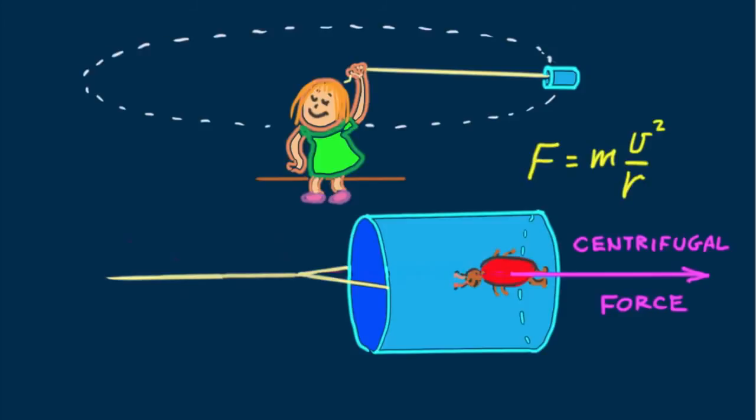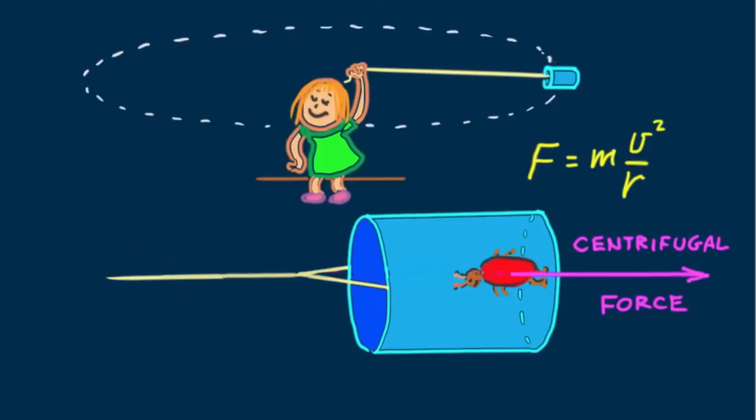But with centrifugal force in a rotating frame of reference, Newton's third law doesn't hold. The bug feels itself being pulled outward, but there's nothing doing the pulling. Bug is pulled outward by what? What does bug pull back on? Nothing. There is no something causing the pulling. No pulling counterpart exists.